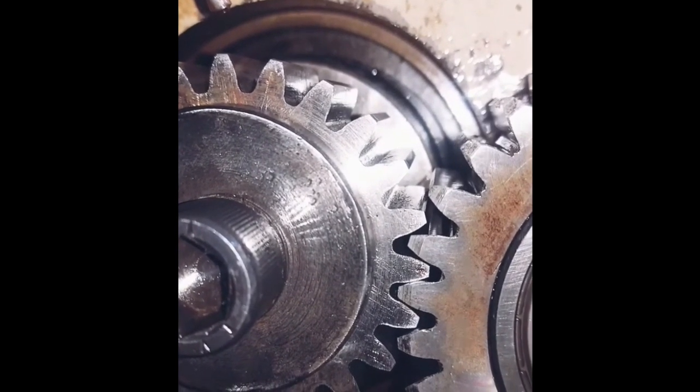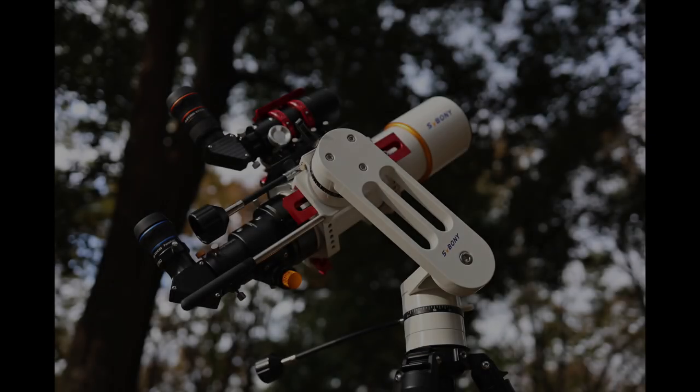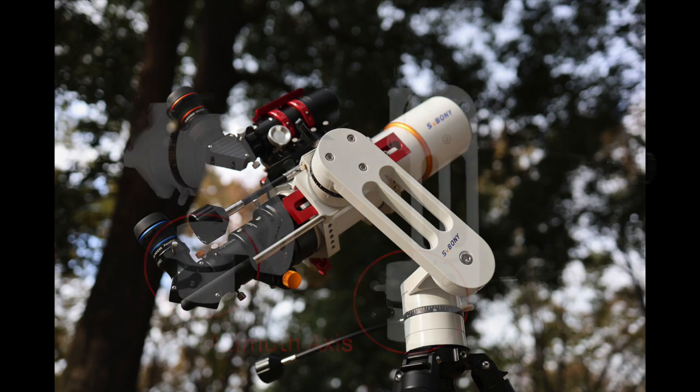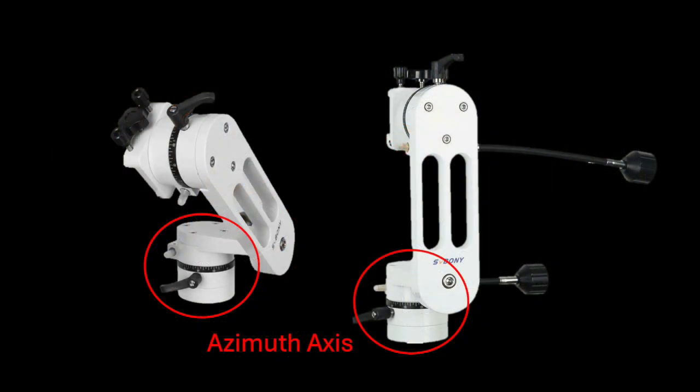It was annoying but not a serious functional problem. However, during one subsequent night of viewing, the entire azimuth axis ceased to work mechanically. This included the brake mechanism. It would simply swivel freely on the azimuth axis.